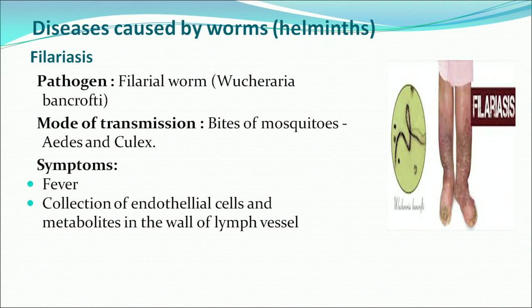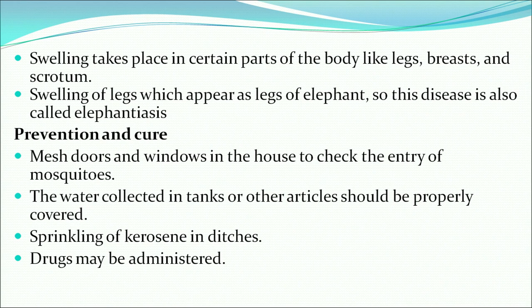Now we will discuss diseases caused by worms — helminths. The first is filariasis. The pathogen is the filarial worm. Mode of transmission is through the bites of mosquitoes Aedes and Culex. Symptoms include high fever, collection of endothelial cells and metabolites in the wall of lymph vessels. Swelling takes place in certain parts of the body like legs, breast and scrotum — swelling of legs which appears like elephant legs, so the disease is also called elephantiasis. Prevention includes mesh doors and windows and covering water tanks.